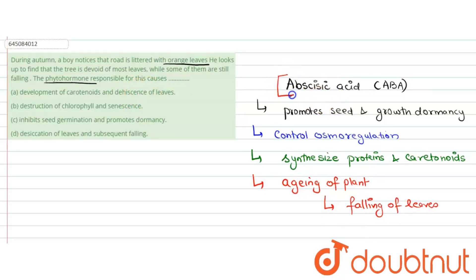But the main reason for the falling of leaves is the destruction of chlorophyll. Chlorophyll acts as a photosynthetic pigment which helps in the process of photosynthesis. When there is destruction of chlorophyll, the plant is not able to survive. Therefore, let's see each option one by one.